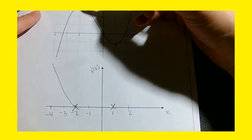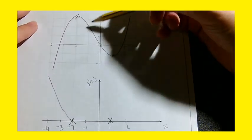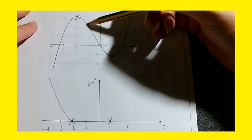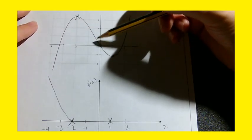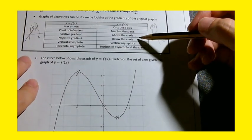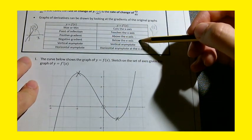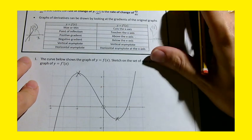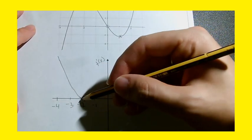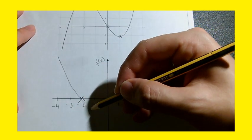What's happening after minus 2? After minus 2 on the original graph the gradient is becoming negative and as it's becoming negative, a negative gradient means I'm going to have a curve that goes below the x-axis.